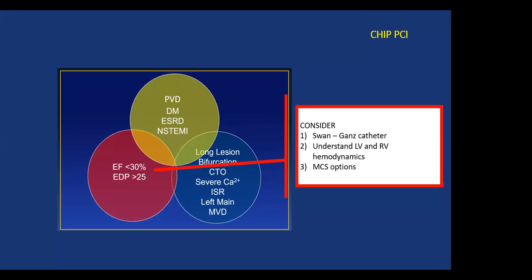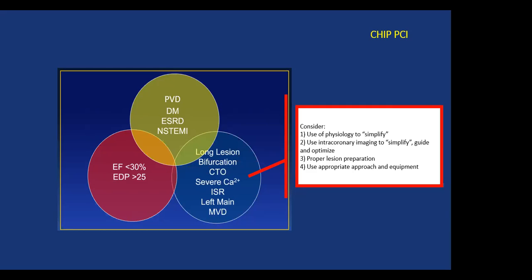Regarding hemodynamics — outside of just using LVEDP and EF assessment — using the Swan-Ganz catheter to estimate RV and LV function and considering mechanical circulatory support is absolutely crucial. With respect to coronary anatomy, assessing which lesions truly need to be addressed and how they need to be prepared is important.